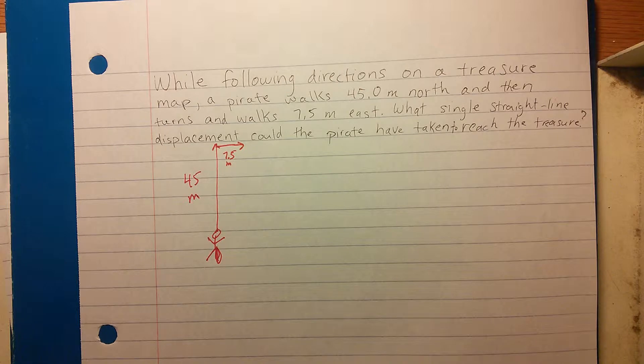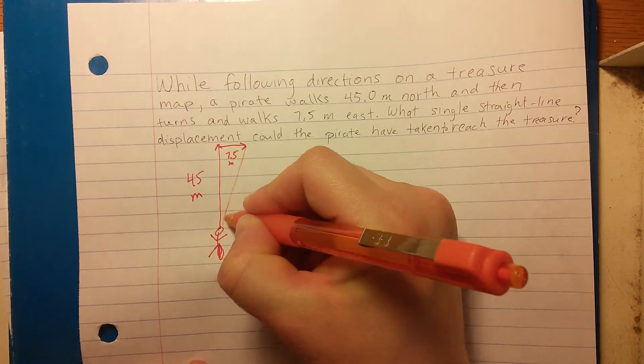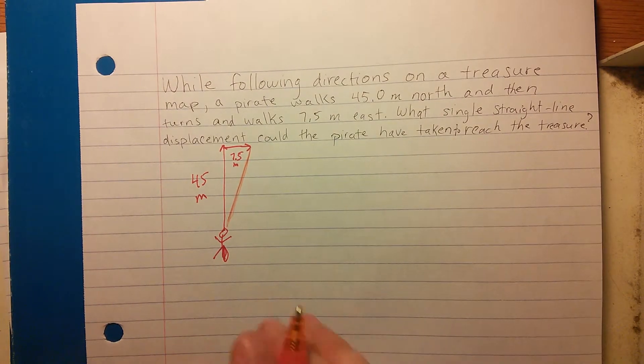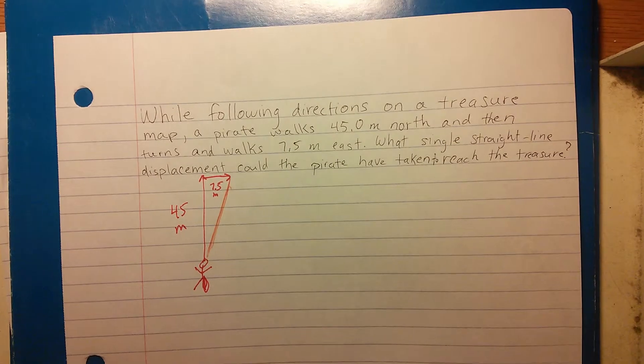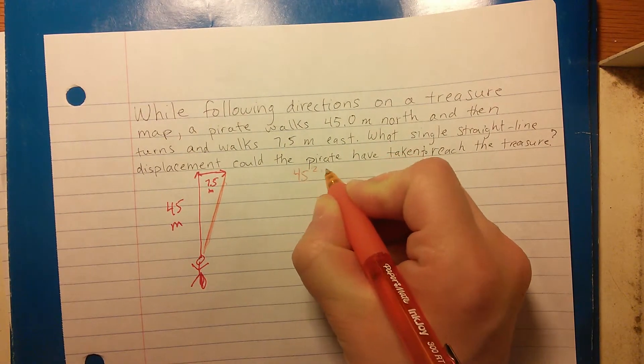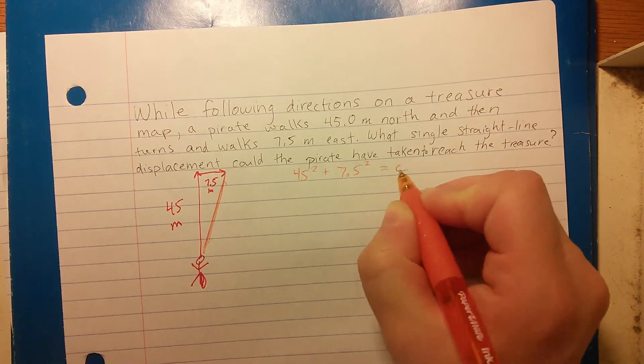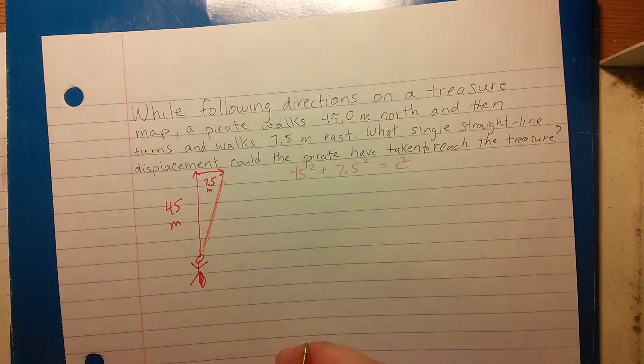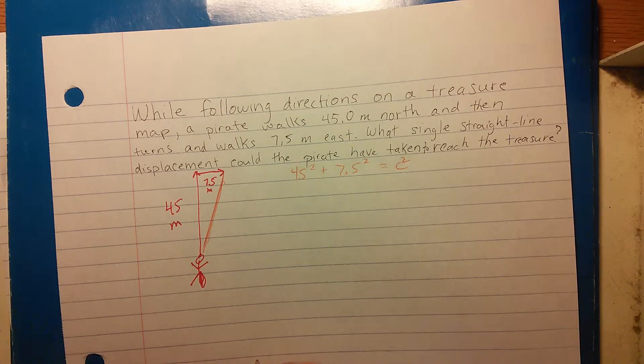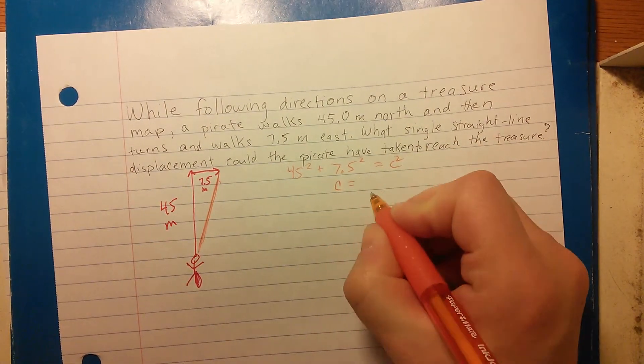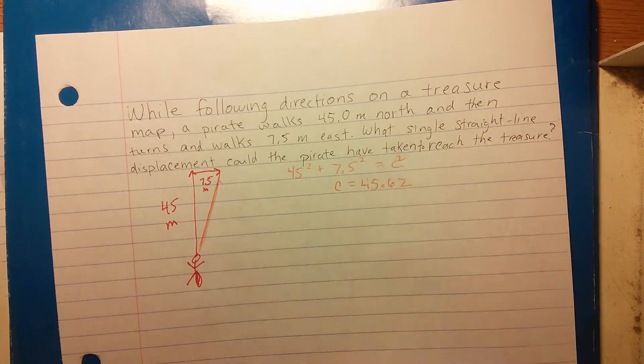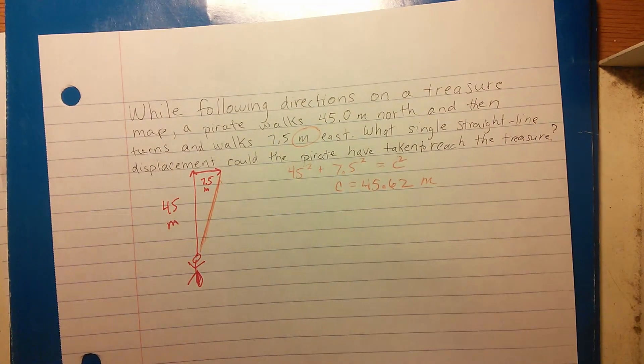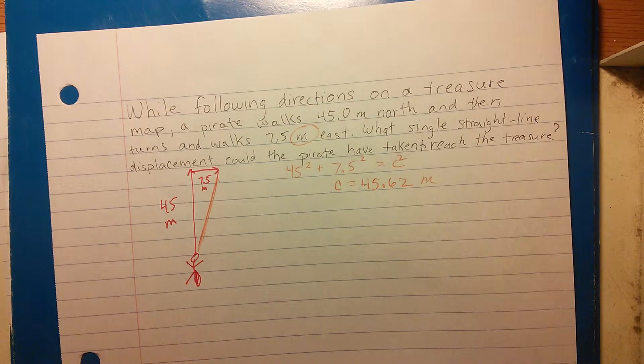In this case, we want to find that orange line. Again, this part is easy. We just want to use the Pythagorean theorem. So this time we're going to be doing 45² + 7.5² = c². If you solve that through—I'm going to assume that you can plug that all into your calculators without my help—you should end up with c = 45.62. We need to make sure we have units there. In this case, our units are meters, so we're going to write meters.